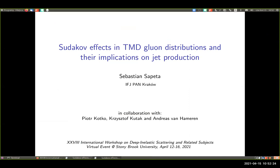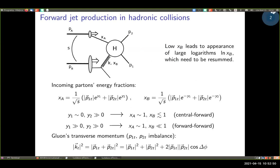Our next speaker is Sebastian Zapeta. He will talk about Sudakov effects in TMD gluon distributions and the consequences for jet production. This is work done in collaboration with Piotr Kotko, Kristof Kutak, and Andreas von Hameren. The focus is on combining low-x resummation and Sudakov resummation in the context of forward jet production in hadronic collisions. In this process, two hadrons or ions collide providing partons with energy fractions x_a and x_b, which take part in hard scattering and produce two outgoing partons p_1 and p_2 as proxies for jets.